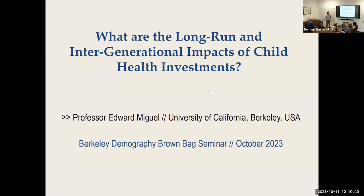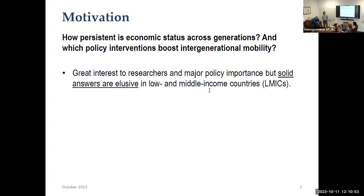I'll be talking about long-run and intergenerational effects of child health investments. This is joint work with lots of folks, some of whom are in the room. A question that motivates this work is trying to understand how economic status is transmitted over time through generations and what we can do to boost intergenerational mobility — really give people a chance to improve their living standards and their children's living standards. This is an important scholarly and policy issue, but the evidence has been limited, especially in low and middle income countries.